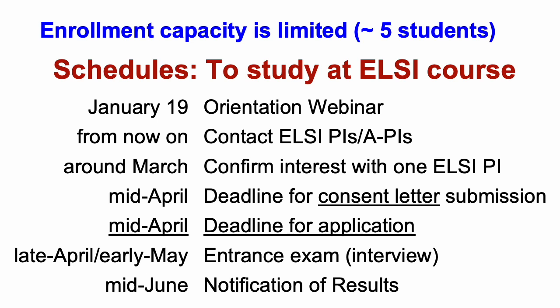Regarding schedules: we will have an orientation webinar on January 19th. The most important deadline is the application deadline, which will be around mid-April. Before the application deadline, you need to submit a consent letter — due about one week before the application deadline. To get a consent letter, you should contact ELSI PIs and APIs, discuss your research interests and plans, and then show your interest to only one LCPI, from whom you may obtain a consent letter. You should express your interest to one LCPI by around March.